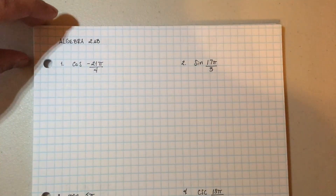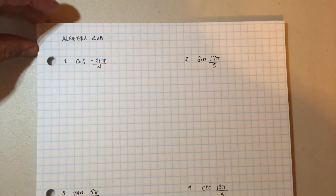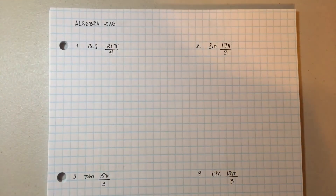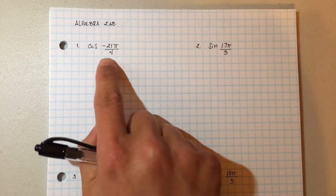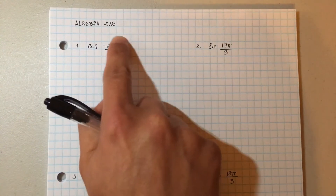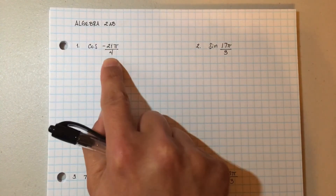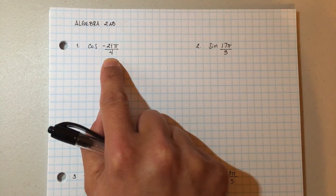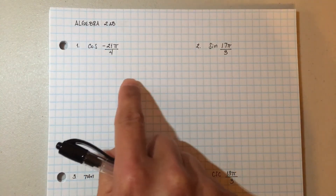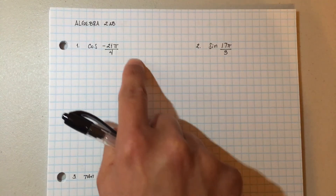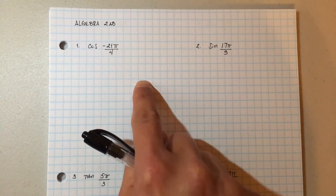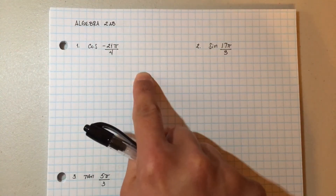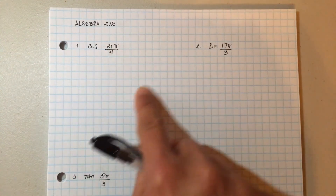Hey guys, I want to go ahead and continue working on these co-terminal angles, just give you some more examples to solidify your understanding of them. So we see these angles, and we have to make them fit between one rotation of the unit circle. One rotation goes all the way around one time, so that's between zero and two pi — that's one rotation.